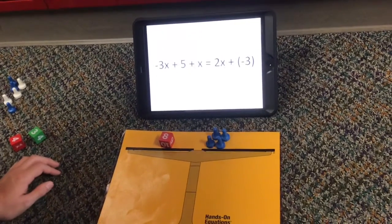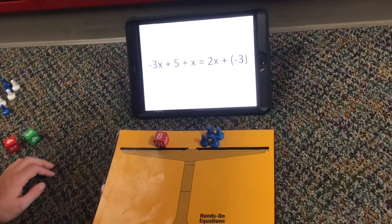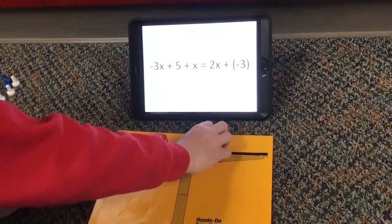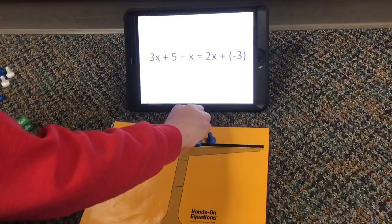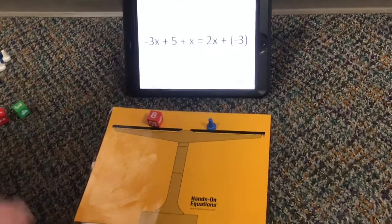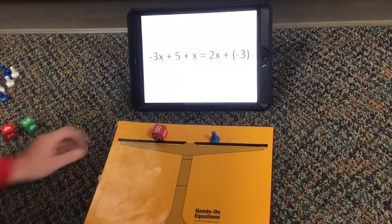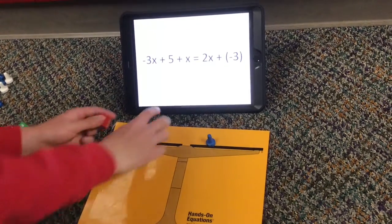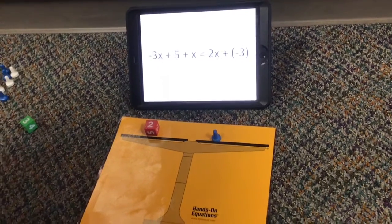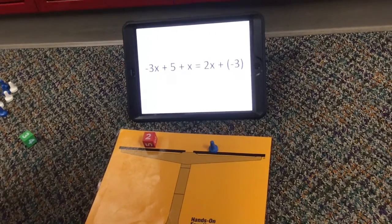So now we have to divide each by 4, so this would be 4x divided by 4 would be 1x or just x. And then 8 divided by 4 would be 2. And then now x equals 2 and that's our final answer.